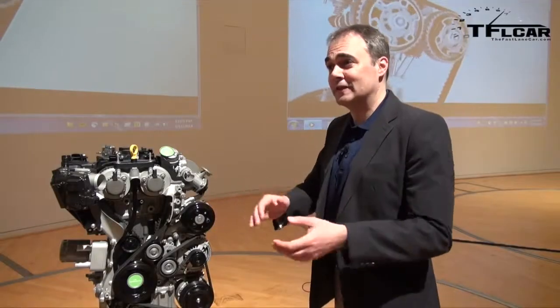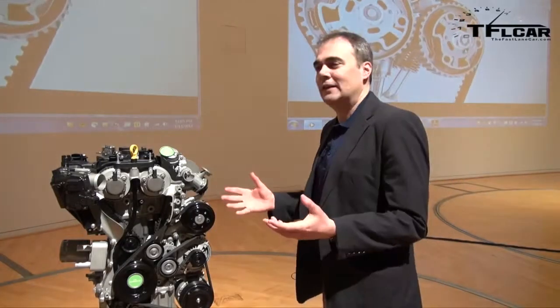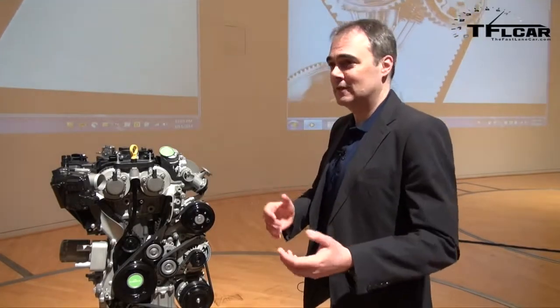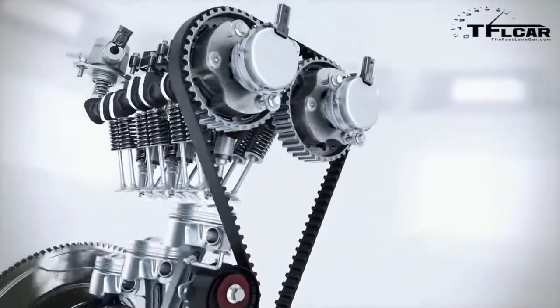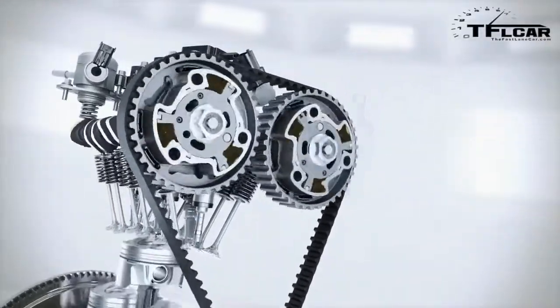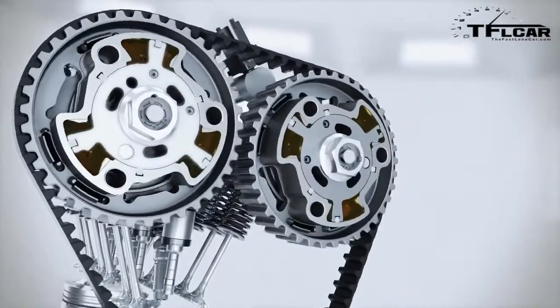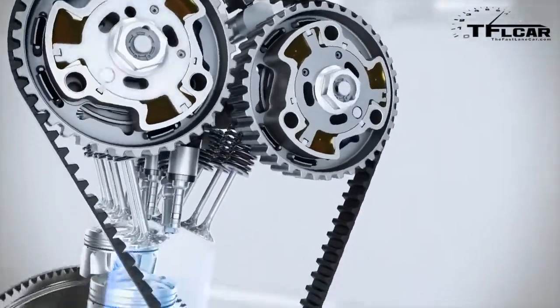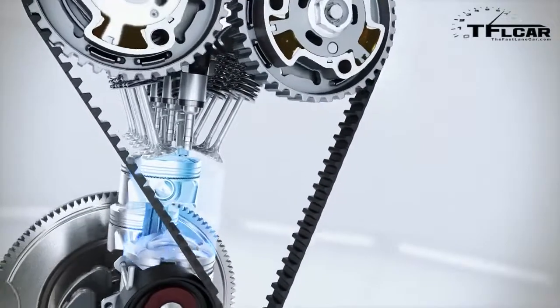So let me talk about the thirsty piece first. So the other half of EcoBoost is Eco. And what you get with that is a smaller engine. So the smaller engine, you have less throttling, you have less friction, you have less weight. So all of those things give the Eco part.